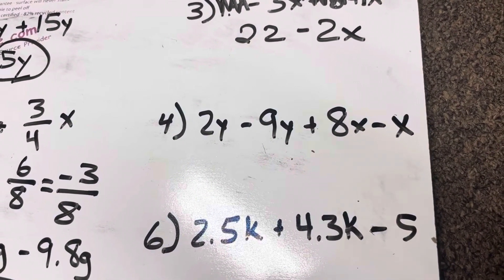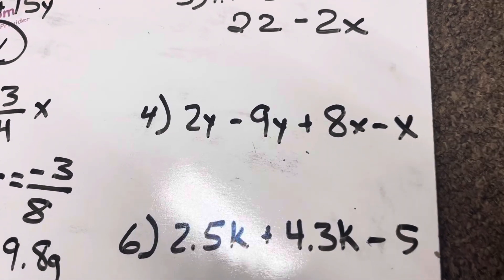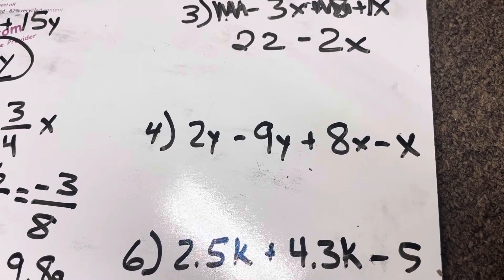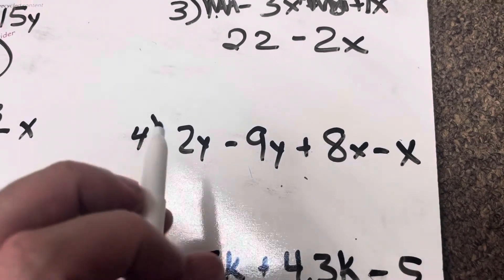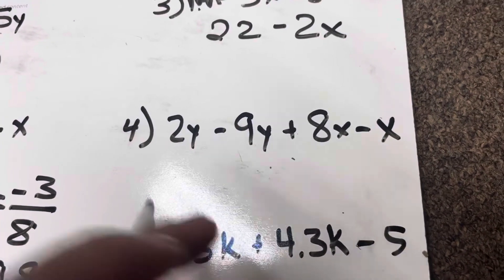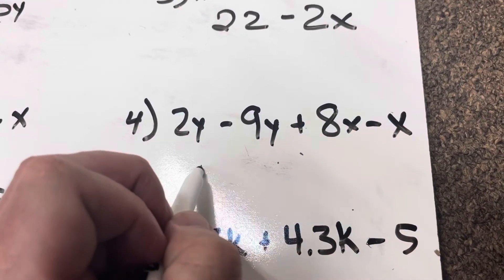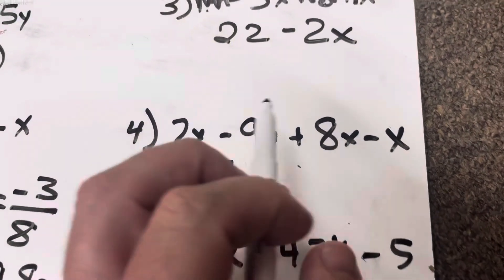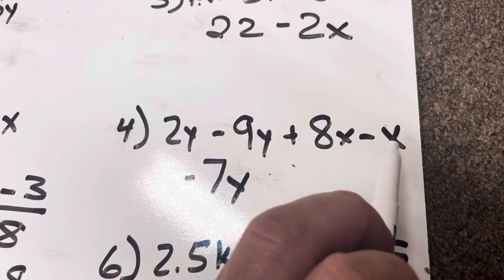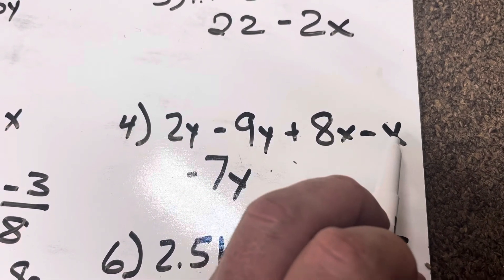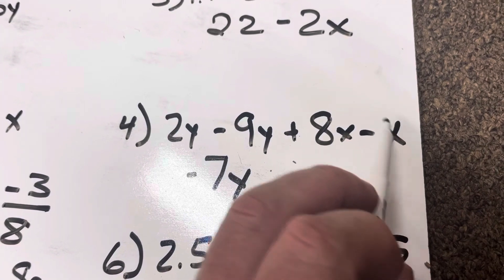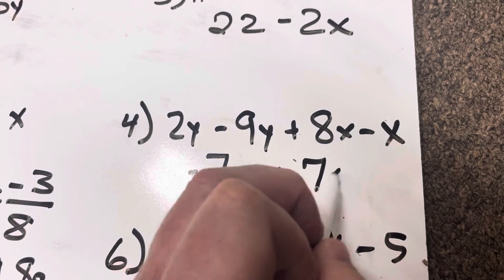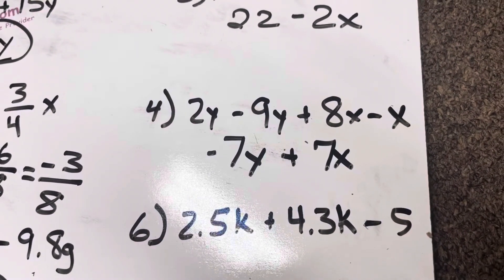2y minus 9y plus 8x minus x. Okay. Well, 2y minus 9y, that's just 2 minus 9. 2 minus 9 is negative 7y plus 8x minus x. Well, this is like 8 minus 1. 8 minus 1 is 7. So it's going to be plus 7x.